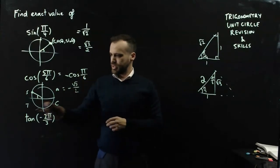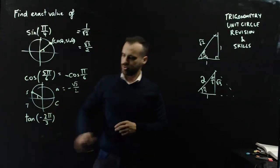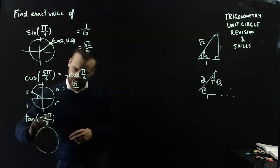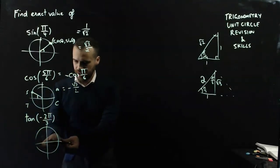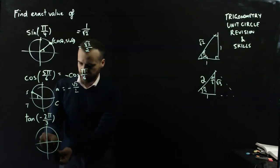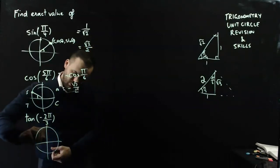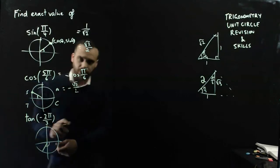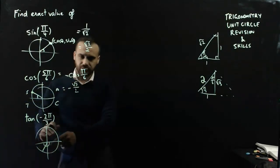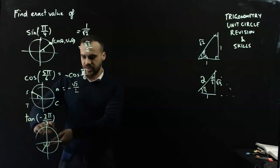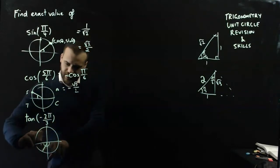And this one here, tan negative 2π on 3. A unit circle, but it's a negative angle, which means we start at our x-axis, we go π on 3, 2π on 3, we end up here, that's 2π on 3, but the angle I'm interested in is the reference angle, the acute angle between the x-axis and that line I just drew, that's π on 3.